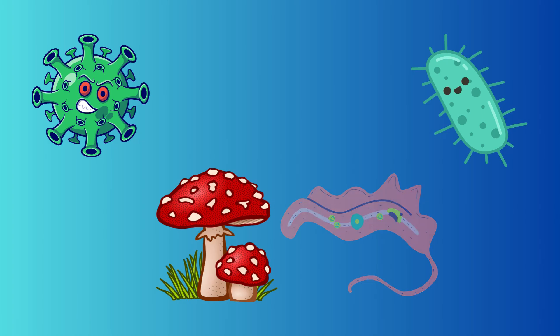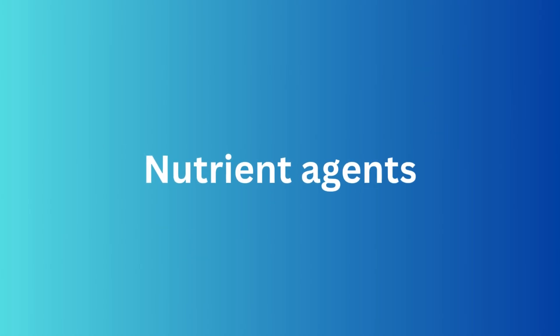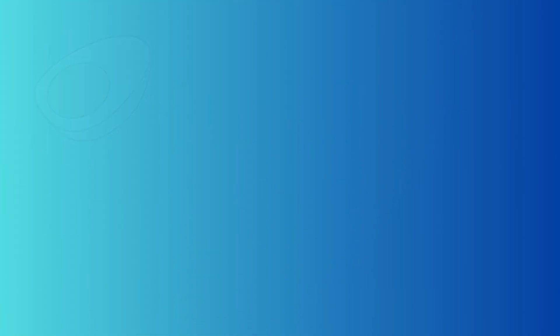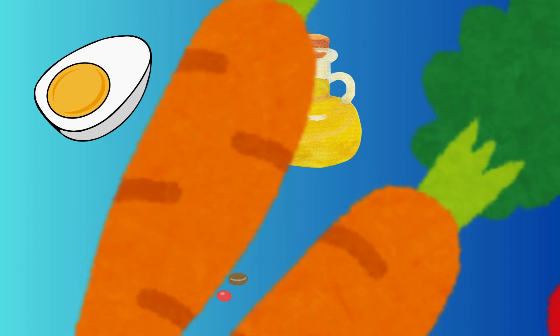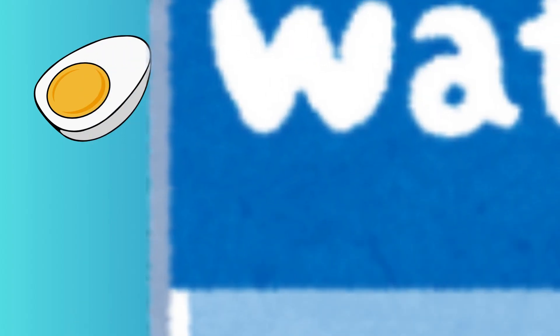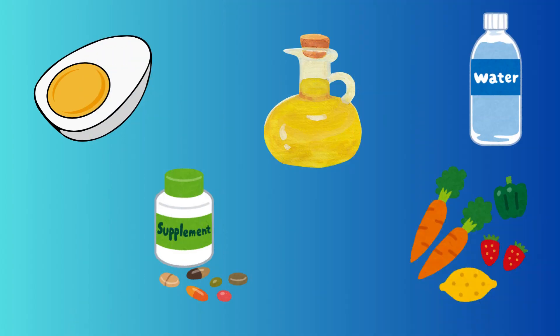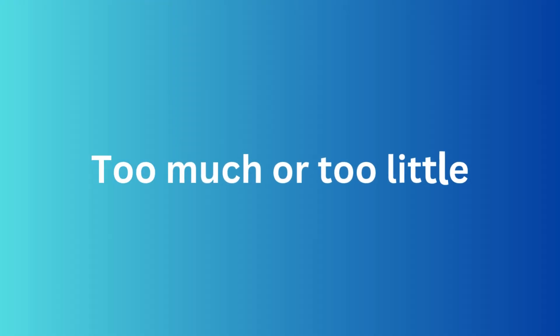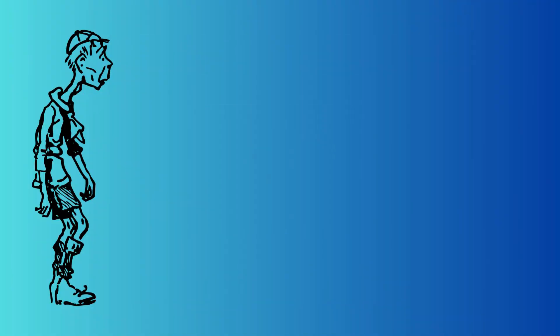Next, nutrient agents. Nutrients like proteins, fats, vitamins, minerals, and water are crucial for our health. But too much or too little can lead to diseases like malnutrition, anemia, or obesity.